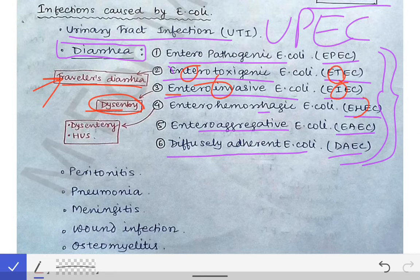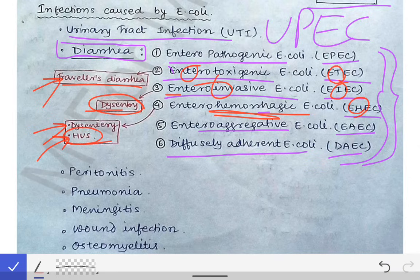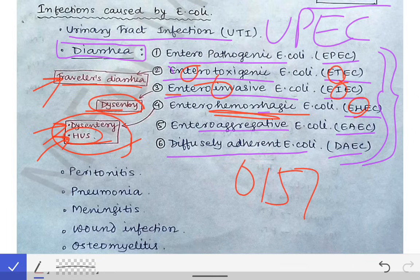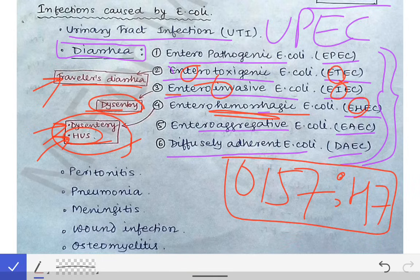The next important one is enterohemorrhagic E. coli (EHEC). By the name, hemorrhagic means it will cause bleeding — that means bloody diarrhea. It also causes HUS (hemolytic uremic syndrome). A particular strain of E. coli is involved in HUS — that is the O157:H7 strain of E. coli, which causes hemolytic uremic syndrome.